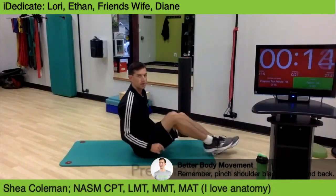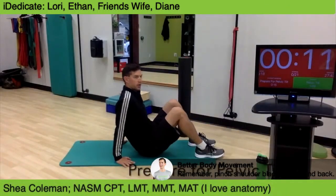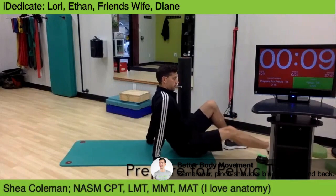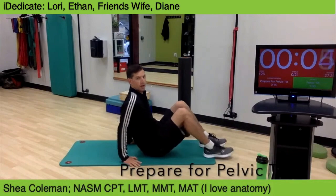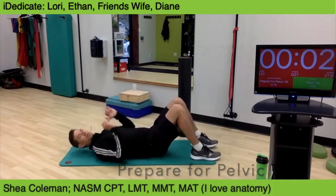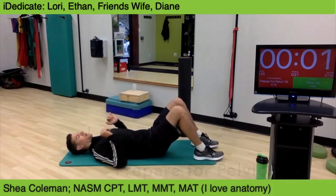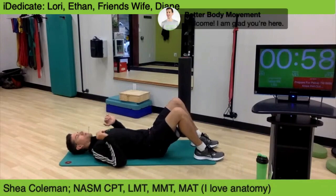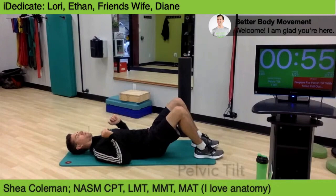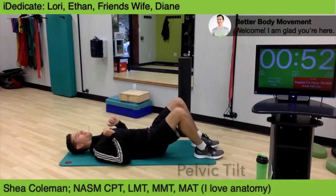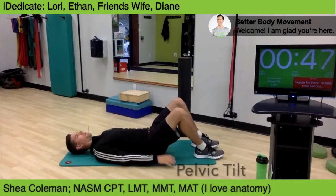For pelvic tilts, create a kegel — like you're cutting off going to the bathroom — then think of a dorito under your low back and crush it. Kegel, get that pelvic floor really firm, tighten down, then compress that core crushing that dorito under the low back. Another way to think about this: if you had a belt under your low back, pin that belt to the floor so it can't be pulled out.